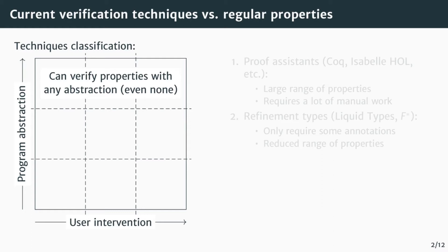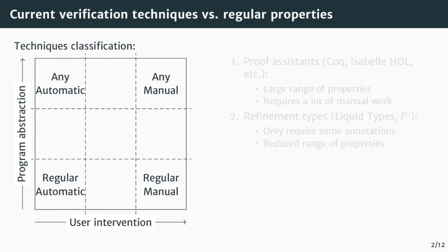Overall, this axis measures the range of properties that can be verified by the technique. From left to right, we measure how much a user is active during the verification. On the left, we have fully automated techniques, and on the right, manual techniques.